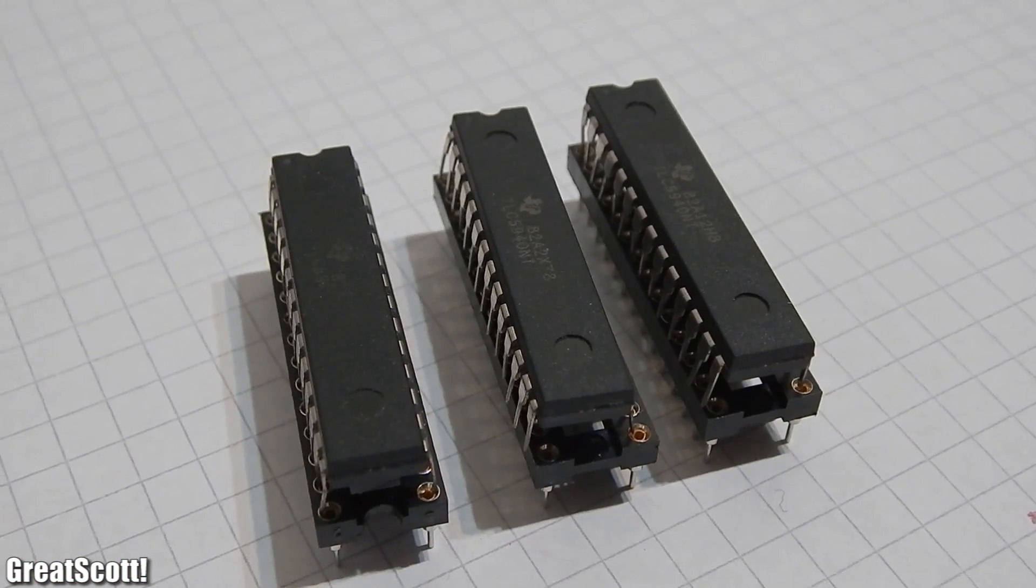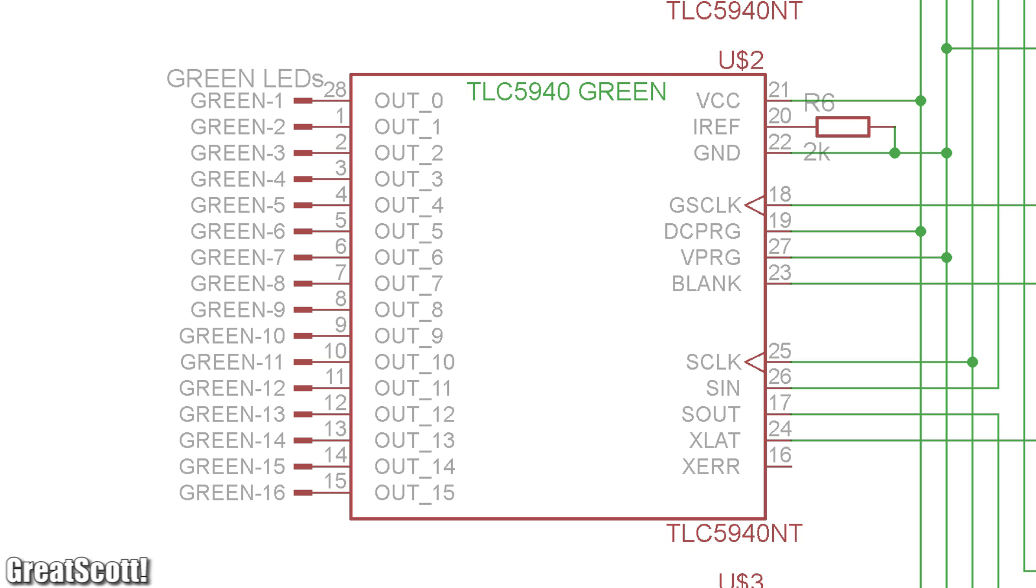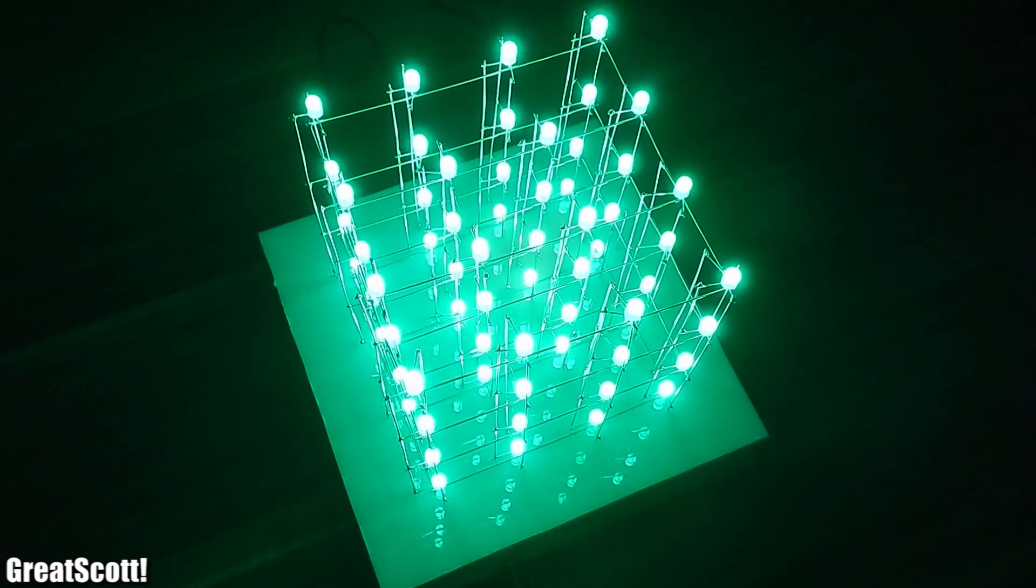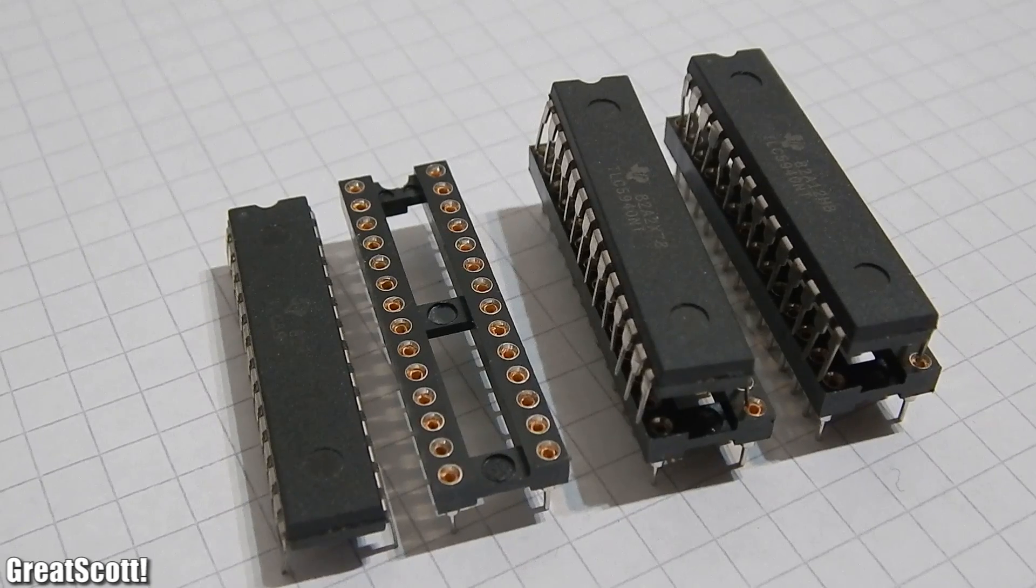We need the TLC 5940. Each one can control 16 LEDs, which is basically just what we need because we have 16 LEDs in one layer. But we have 3 different colors, so we're gonna need 3 of those.